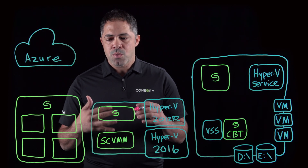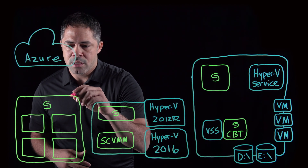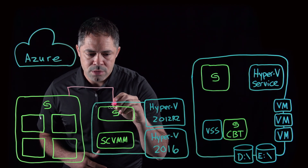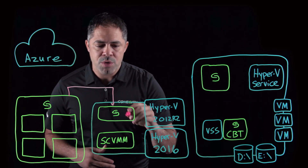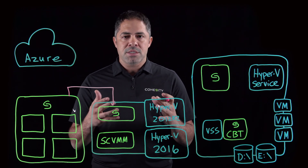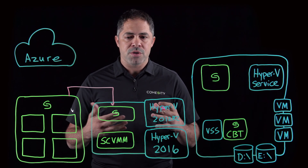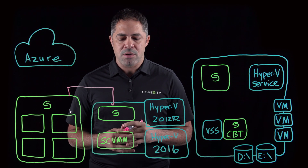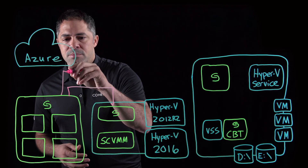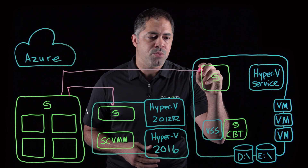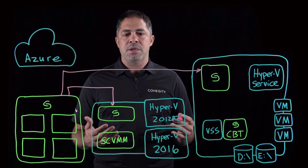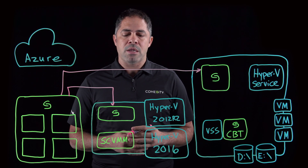We typically have connectivity between our Cohesity cluster, which then communicates with our ephemeral agent that gets instantiated every time we need to perform a job or function. This happens with System Center, but at the same time it also happens directly with the Hyper-V host, because we have the ability to communicate directly with both.